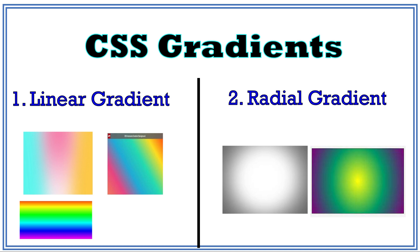So what is gradual? Gradual means a change, and transition also means a change. We will create a new color by blending one color into two colors.